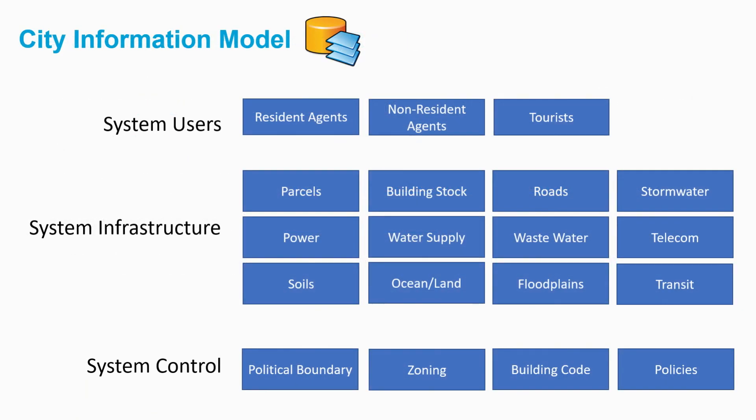I'm going to talk first about the information model we develop for the tool and then about the simulation process. The information model is focused first on people. We wanted to establish economics and people impacts, so we borrowed a term from transportation engineering called agent-based modeling and introduced millions of avatars into our models. If a city has a million people, we have a million people living in the city being simulated — going to work, going home, conducting commerce — all of that activity on a daily basis.